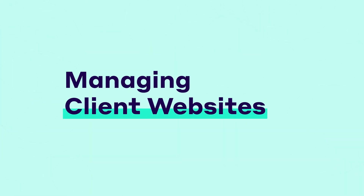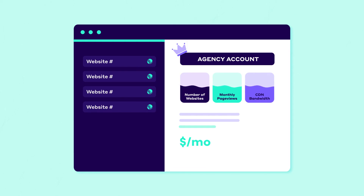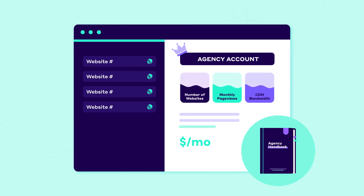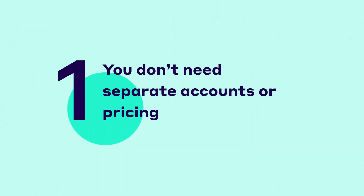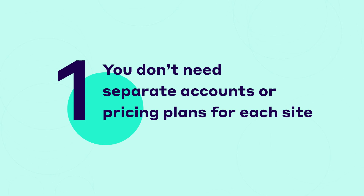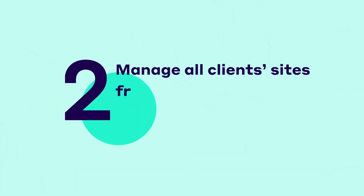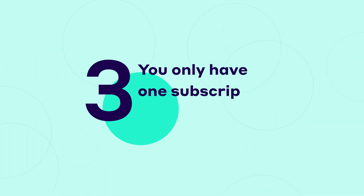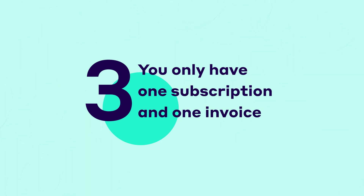Once your agency account is ready, you can start adding and managing client websites from it. We have detailed guides on how to do so in the Agency Handbook. Our sales team will send it to you once you're all set up. You don't need separate accounts or pricing plans for each site in your agency account. Everything is managed from your NitroPak dashboard, and since there's only one subscription, you'll also receive one invoice for the entire thing.